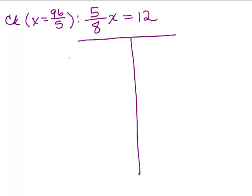All right. So we take our original problem, 5/8 times 96/5. We're going to plug in 96/5. And let's see, the 5's cancel. And we get 96/8.